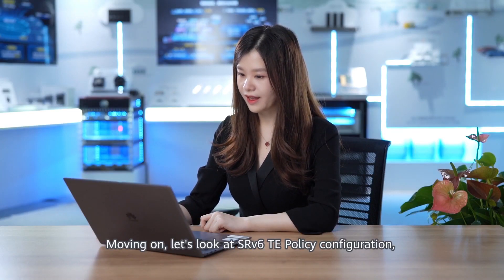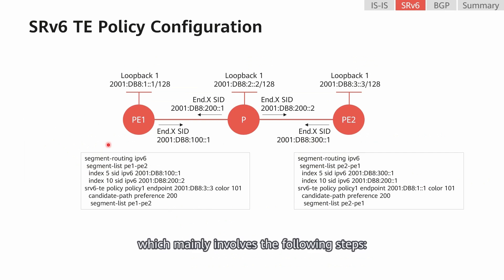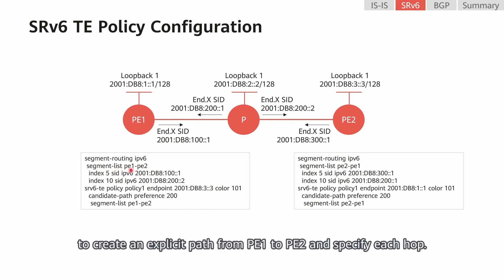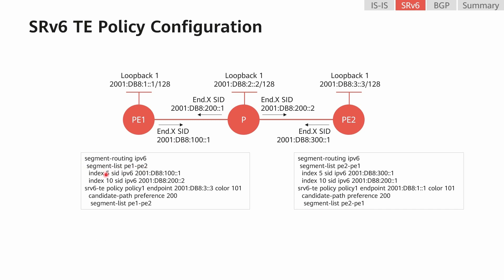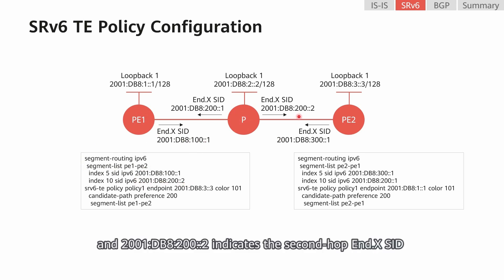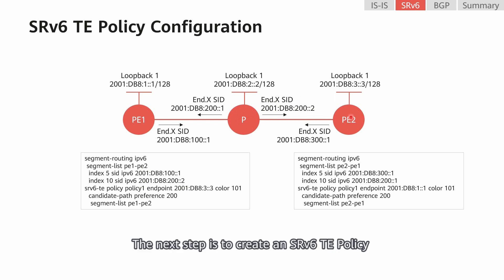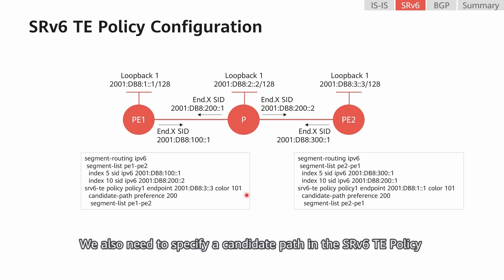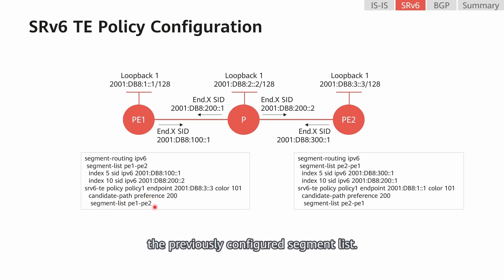Moving on, let's look at SRv6 TE policy configuration, which mainly involves the following steps. The first step is to run the segment-list command to create an explicit path from P1 to P2 and specify each hop. In this example, the first address indicates the end.x SID representing the adjacency from P1 to the P, and the second address indicates the end.x SID representing the adjacency from the P to P2. The next step is to create an SRv6 TE policy whose endpoint is a loopback interface address on P2 and color value is 101. We also need to specify a candidate path in the SRv6 TE policy and configure the path to reference the previously configured segment list.